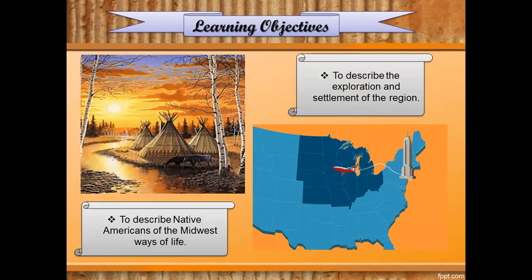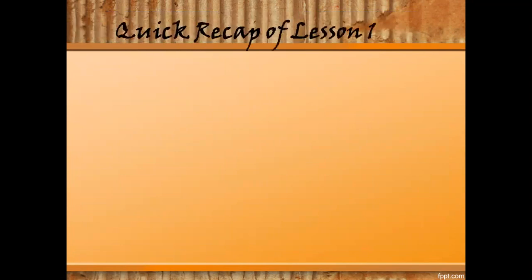But before we proceed, let's have a quick recap of Lesson 1, which was about the geography of the Midwest. We've learned that the Midwest is a region of lakes, prairies, and farms. So now let's see how much we've remembered from the previous lesson.